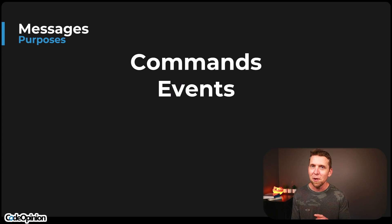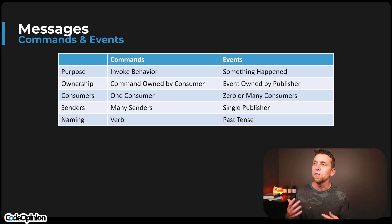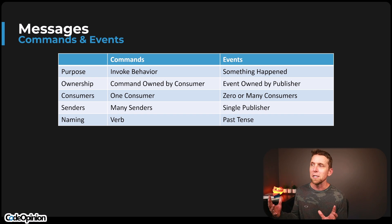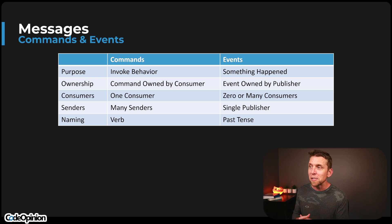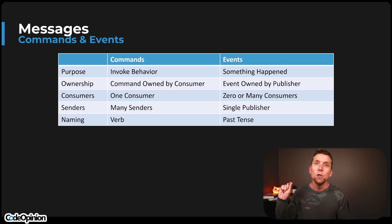There's another distinction that needs to be made — between commands and events. Kafka is an event streaming platform with publish-subscribe of events, not commands. With a queue, you're generally interacting with commands, and the purpose of a command is to invoke behavior. Ownership is how I like to make the distinction: a command is owned by the consumer, and there's only ever one single consumer — one boundary, one service — that is going to process that command.